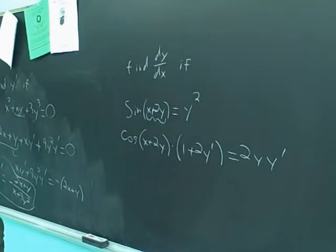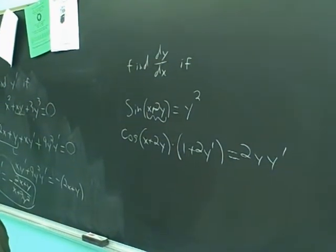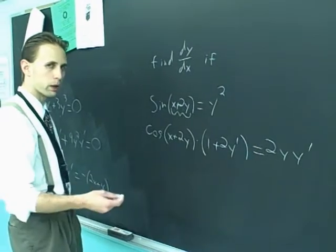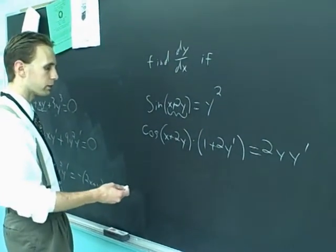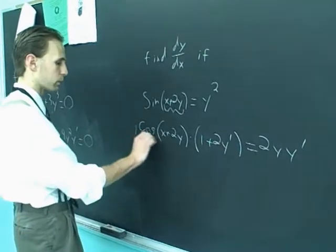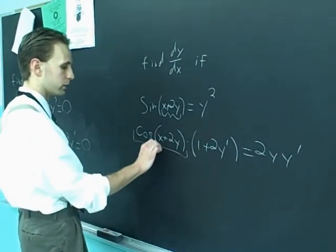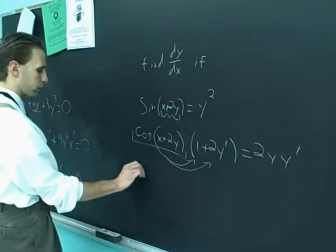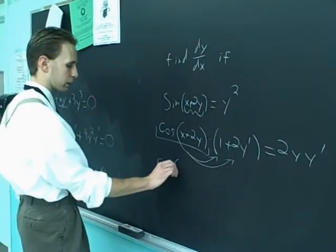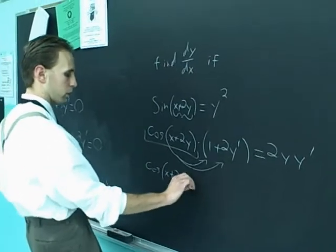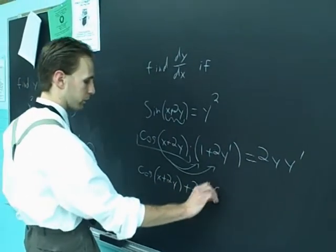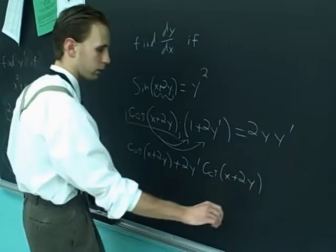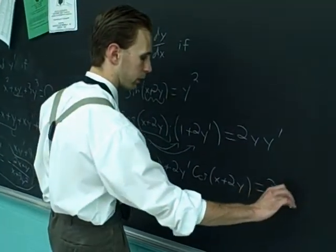2y y prime. It looks complicated, but it's really not so bad. What we have to do is we have to group all the y prime terms and the non-y prime terms, which unfortunately means we have to multiply this out, distribute this to that. But it's no big deal. Cosine x plus 2y plus 2y prime cosine x plus 2y equals 2y y prime.